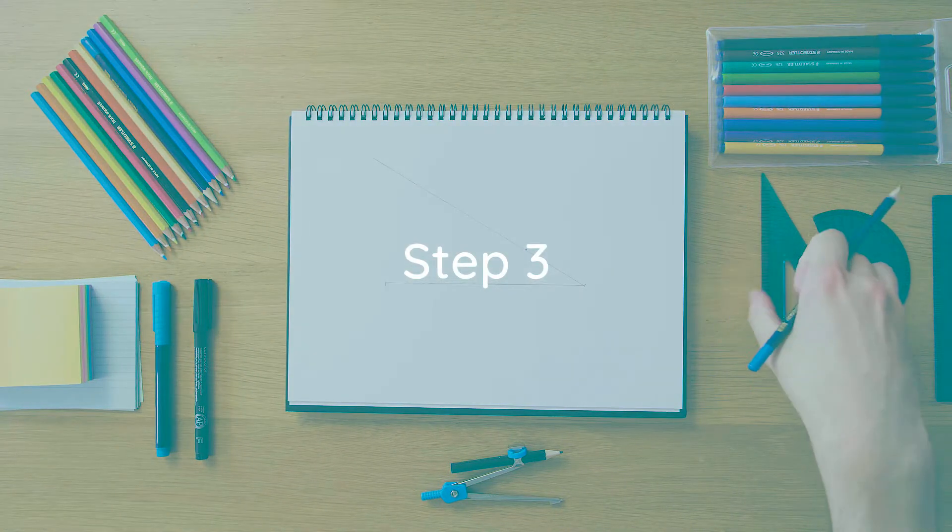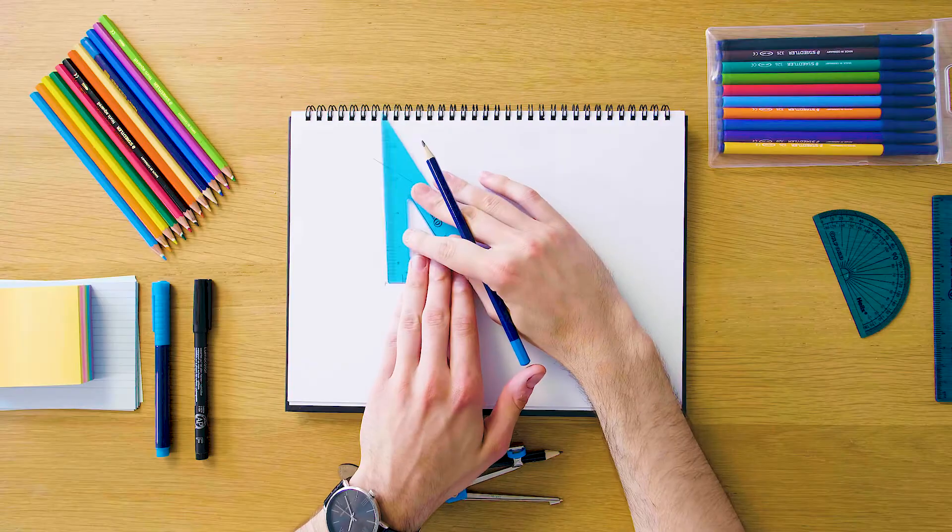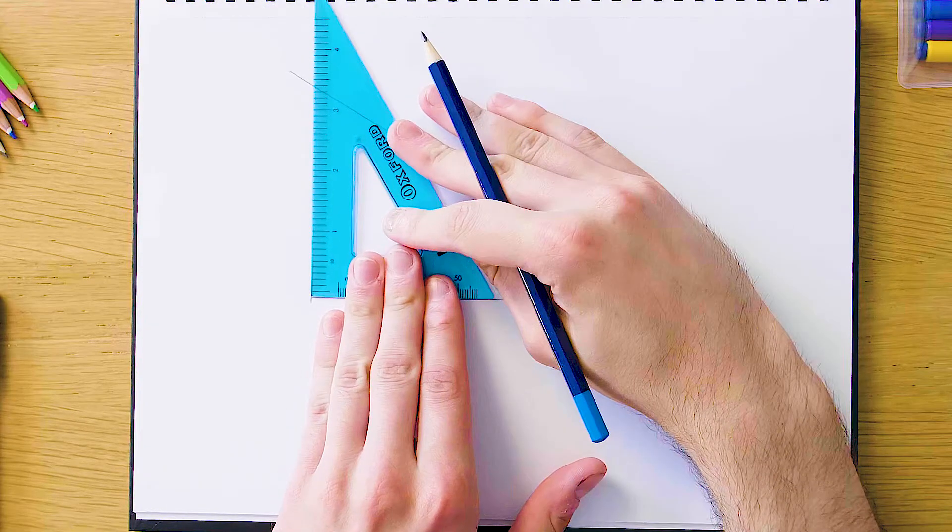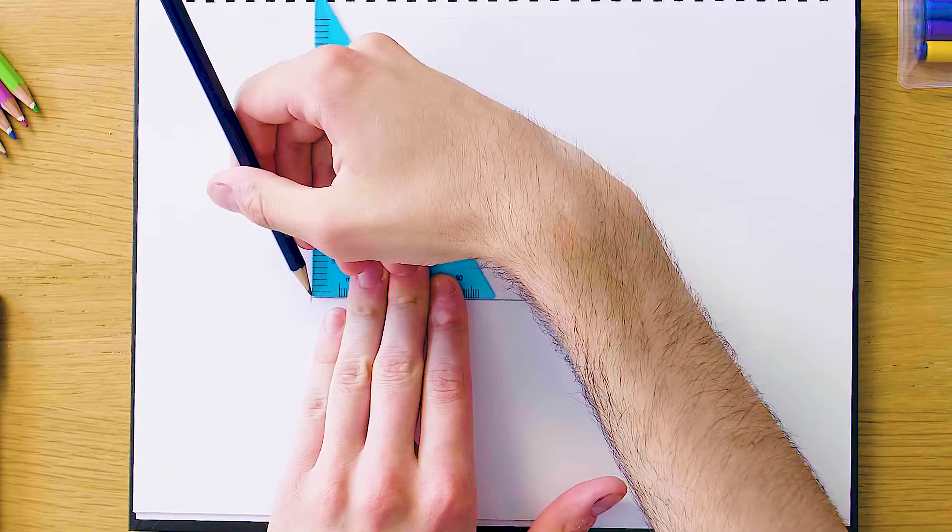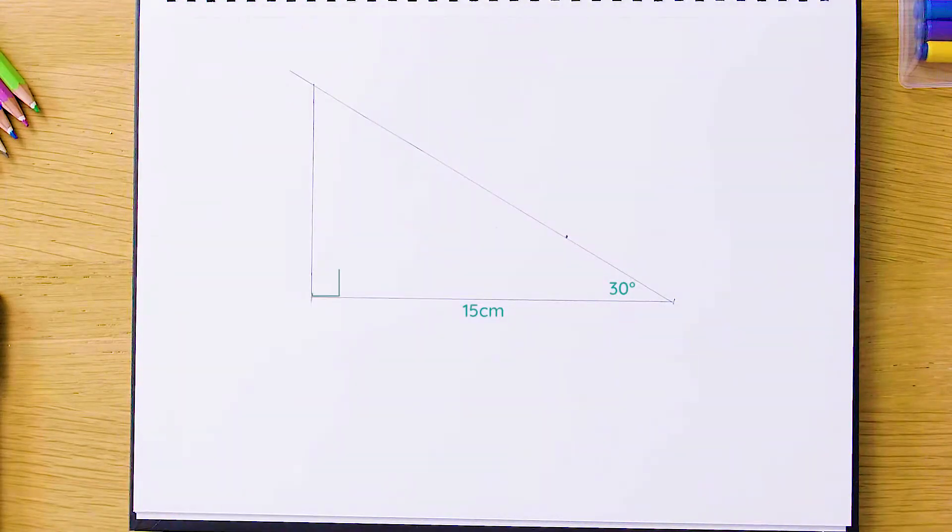And our last step is going to be to use our set square to get our 90 degree angle within the triangle. So perpendicular to this bottom line we're just going to draw a 90 degree line so that it connects with our construction line and that is going to be our triangle finished. So that was it for this construction and I'll see you next time.